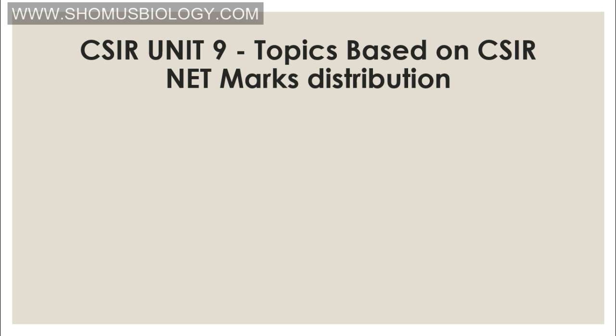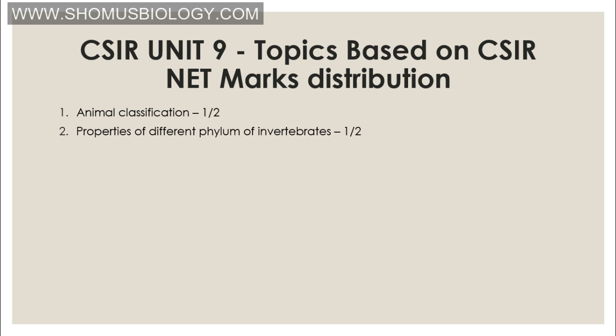Unit 9 covers Classification Biology and the distribution of animals and plants throughout the Indian Subcontinent. Animal Classification accounts for 1-2 questions, covering both Vertebrates and Invertebrates. For Invertebrates, you need to remember classification up to Phylum level; for Vertebrates, up to Class level. Important properties of different phyla in invertebrates — Porifera, Cnidaria, Ctenophila — and few example animals.